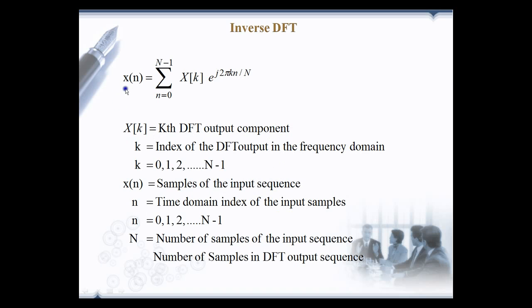Inverse DFT is given by the equation x(n) equals sigma n equals 0 to N minus 1, X(k) e to the power j 2 pi k n divided by N. x(n) is the time domain samples and X(k) is the frequency domain samples.